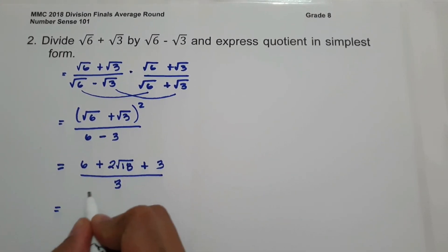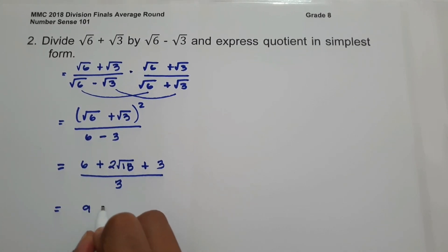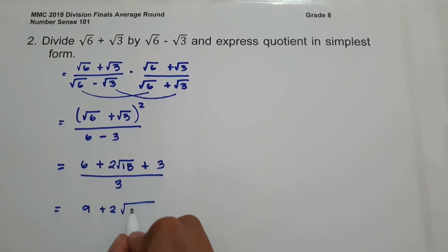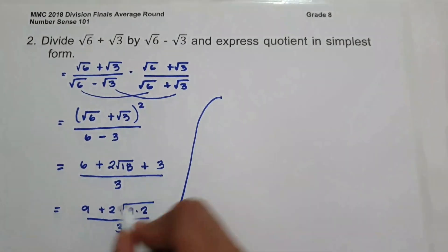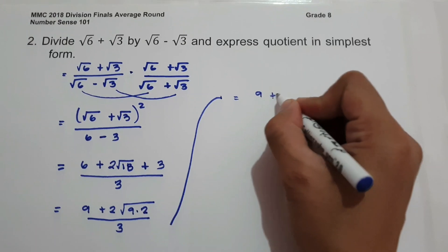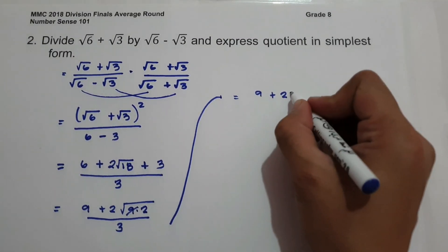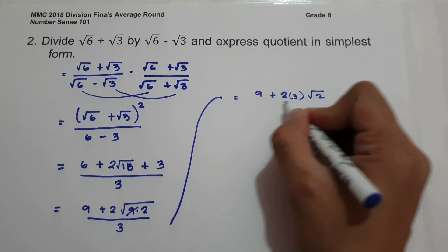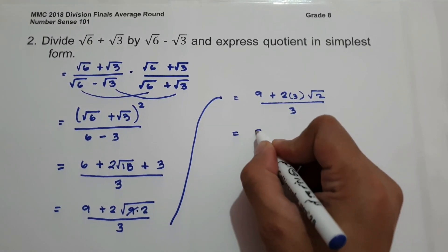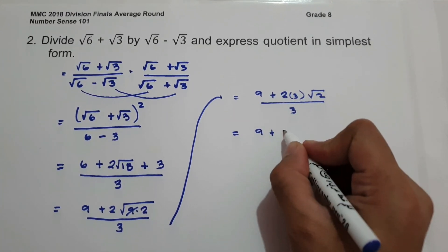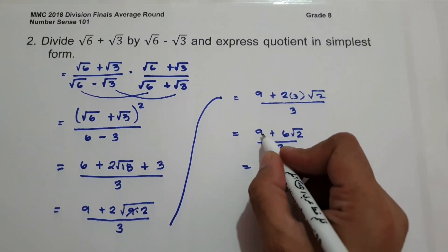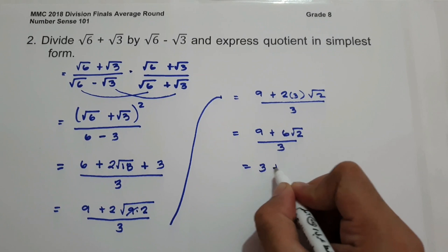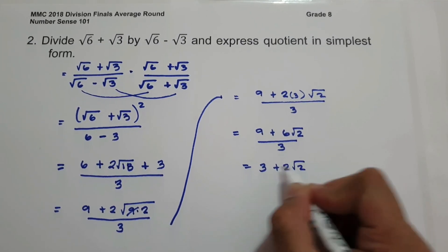To simplify: 6 plus 3 is 9, plus 2, and the square root of 18 is factorable by 9 and 2, over 3. So we have 9 plus 2 times the square root of 9, which is 3, times square root of 2, over 3. That gives 9 plus 6 times square root of 2, over 3. Dividing, 9 divided by 3 is 3, and 6 divided by 3 is 2, giving us 3 plus 2 square root of 2. This will be our answer.